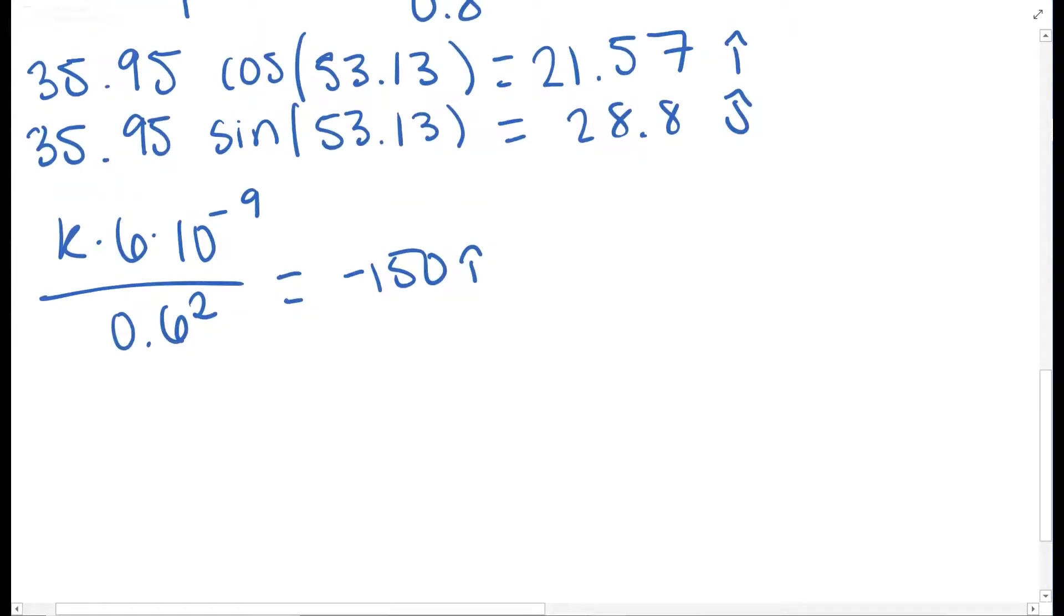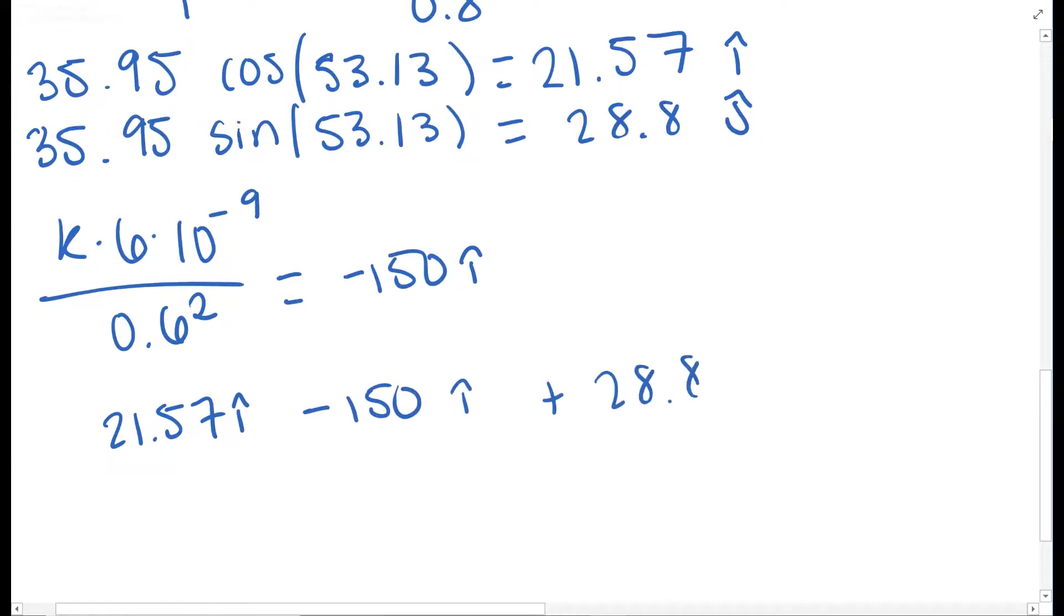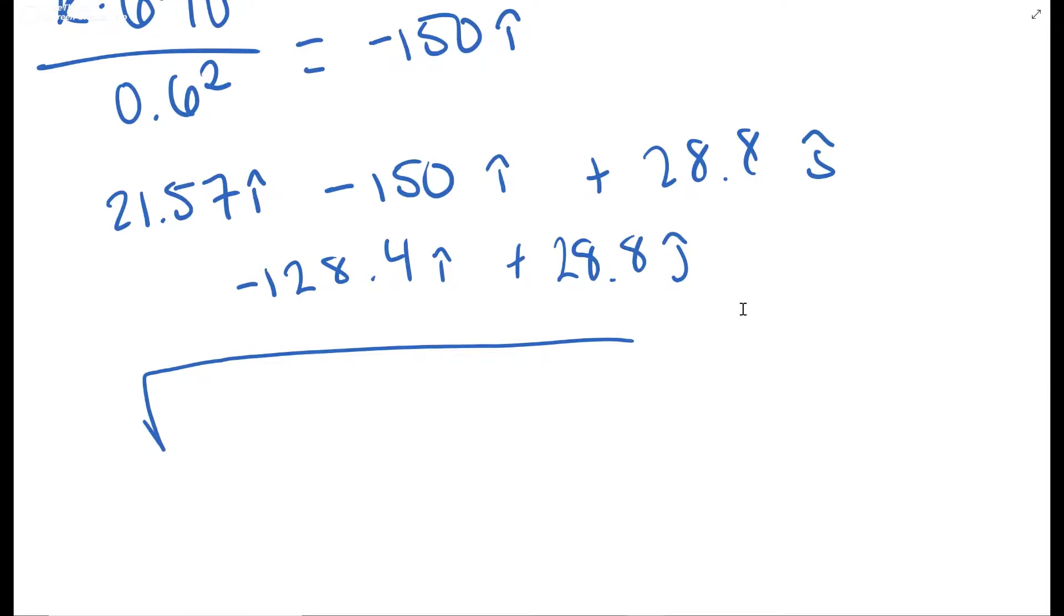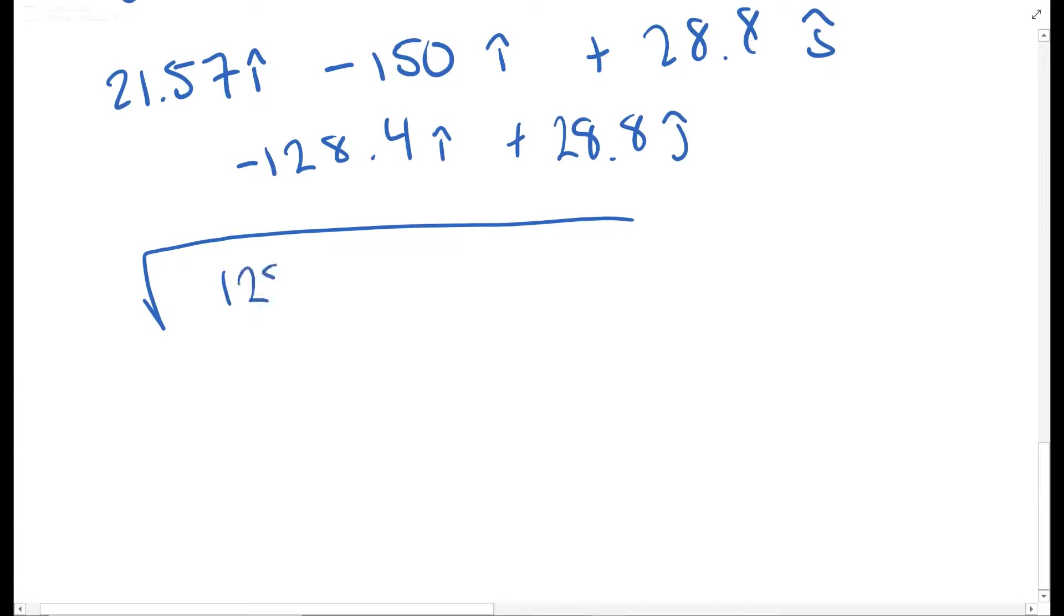Now we're going to sum up our x and y's. So we have 21.57 i minus 150 i plus 28.8 j. Just treat those as variables to get negative 128.4 i plus 28.8 j. To find the magnitude, use the Pythagorean theorem with these two numbers. That is 128.4 squared plus 28.8 squared, which is going to give you about 131.59 newtons per coulomb.